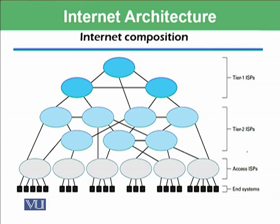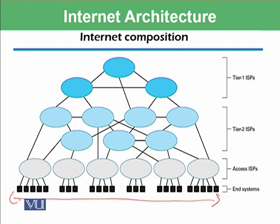Here is the internet composition. We, as users, are at the bottom, connecting with access ISPs which are the service providers — cable operators like PTCL, Y-Tribe, and Nayatel. Those are then connected with tier 2 ISPs, and then tier 1 ISPs. We will go into the details of each one by one.